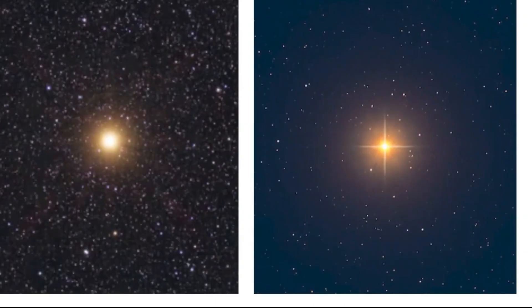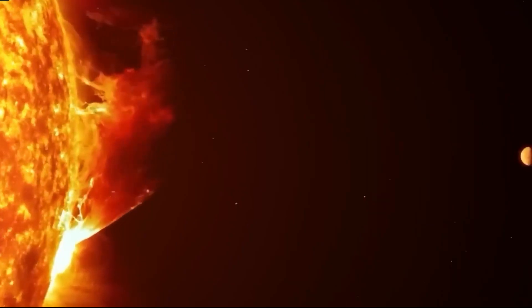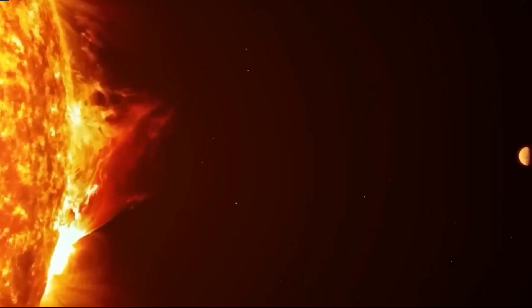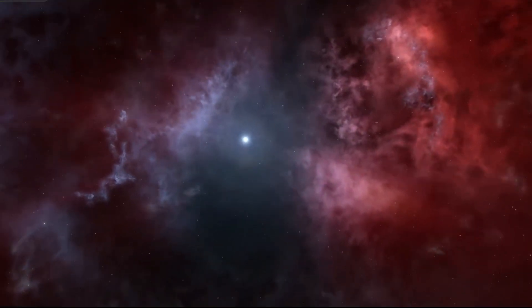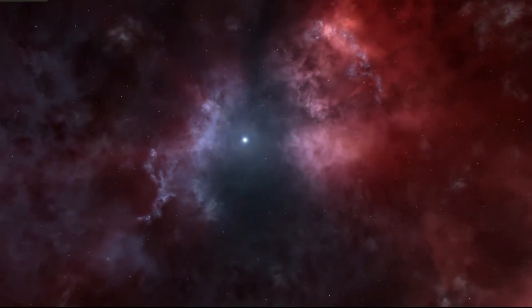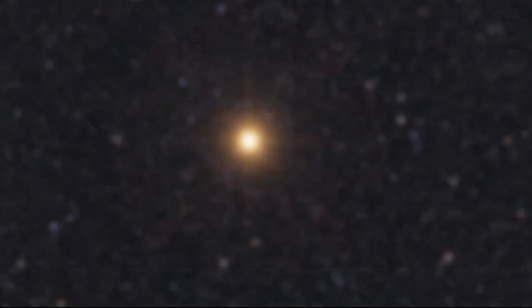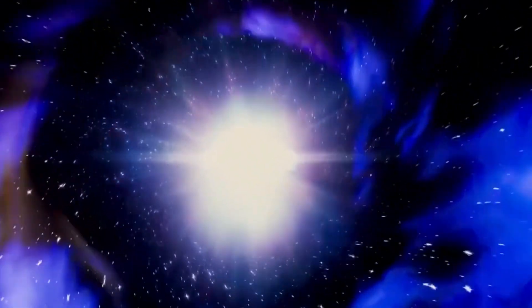On the other hand, type 2 supernovas, like the one expected from Betelgeuse, occur when massive stars run out of fuel and can no longer support their structure, leading to a colossal explosion. These explosions release intense light, heat, and radiation, and can potentially obliterate everything in their path. Type 2 supernovas also generate heavy elements like iron, nickel, and gold, which are scattered into space and contribute to the formation of new stars and planets.